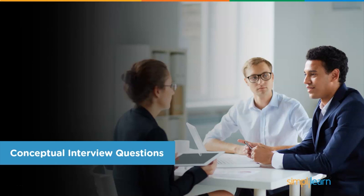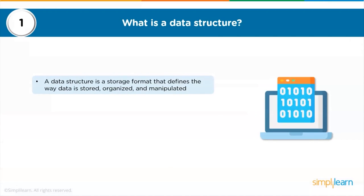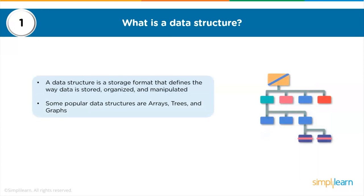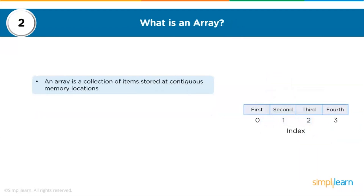The first conceptual question is: what is a data structure? A data structure is a storage format that defines the way data is stored, organized, and manipulated. Some popular data structures are arrays, trees, and graphs. The next question is: what is an array? All items that an array stores are of the same data type. It organizes data so that a related set of values can be easily sorted or searched.